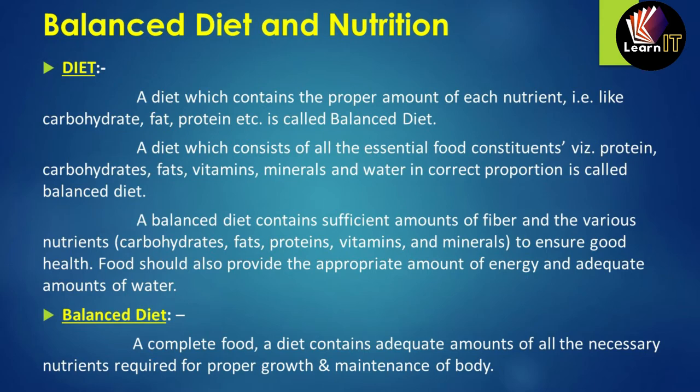Let us discuss the basic definition of diet. A diet which contains a proper amount of each nutrient — in proper manner it contains appropriate amounts of carbohydrates, fats, proteins, etc. — is called a balanced diet. Another definition: a diet which consists of all the essential food constituents, that is proteins, carbohydrates, fats, vitamins, minerals, and water in correct proportion, is called a balanced diet.